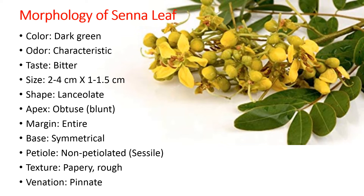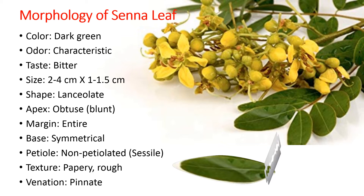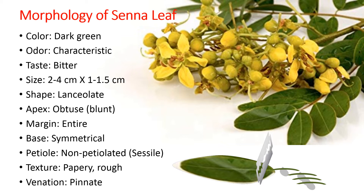Pinnate venation means there is a central midrib, and the veins branch off in a V-V shape like parallel veins on either side. As far as microscopy is concerned, a fresh leaf is to be taken and cut in a transverse way starting from the base. Only the lower one-third region should be used for cutting the section, as the upper region has tissues that appear too similar under the microscope.